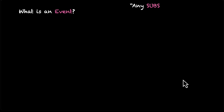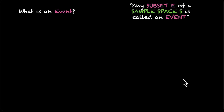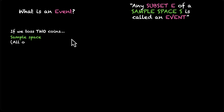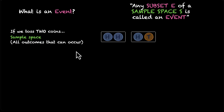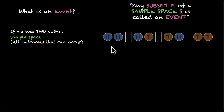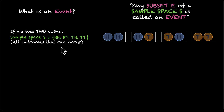We have studied what an event is. It's a subset E of a sample space S — it's a subset of a sample space. Taking an example, if we toss two coins, this is the sample space that we get. We can get two heads, the first coin is heads, the second coin is heads, or both of them are tails. That's how you write it in set notation: S is the sample space, and in this bracket you have these four sample points.